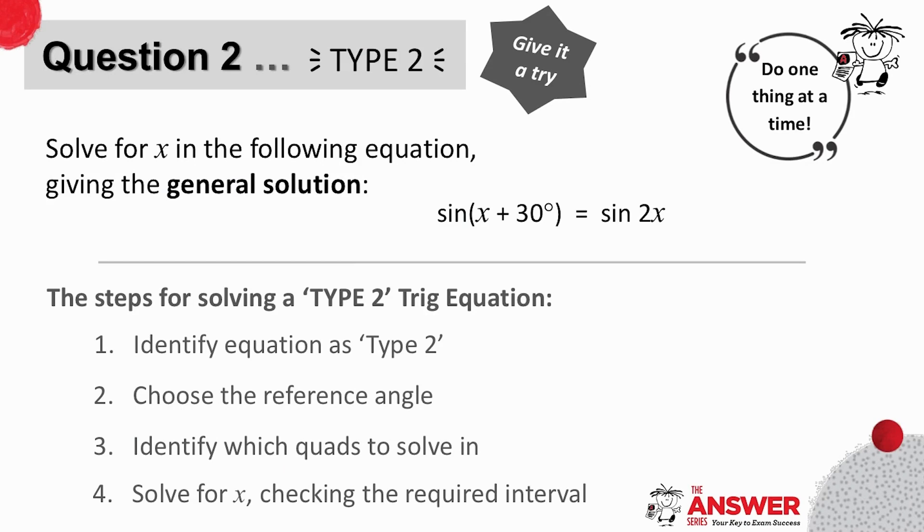The next example is a type 2. It asks us here to solve for x giving the general solution. Let's have a quick look first at what giving the general solution means before trying this example.